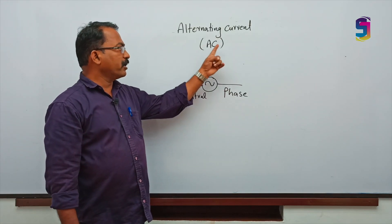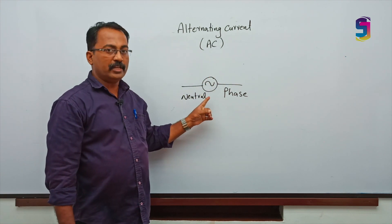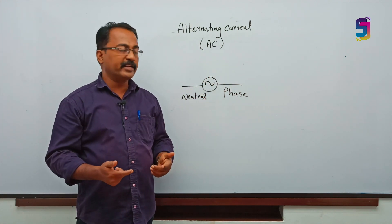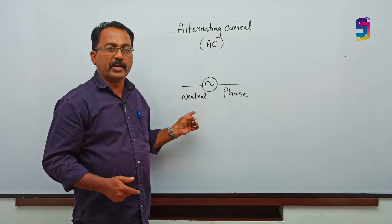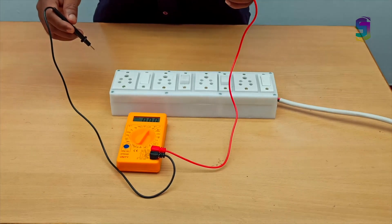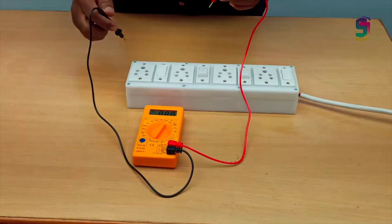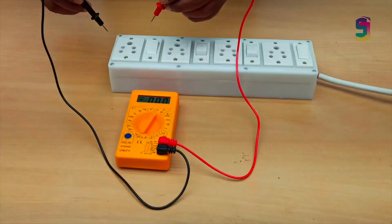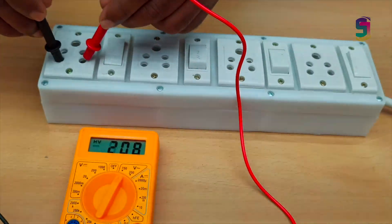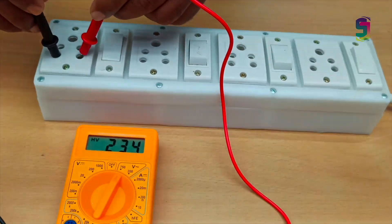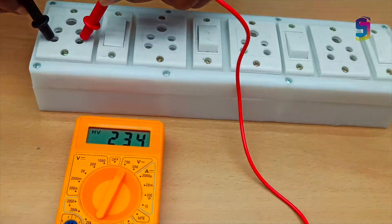The next type of current is alternating current or AC. This is an AC source. Instead of positive and negative, AC has phase and neutral. Now I am measuring the voltage of our domestic supply using a multimeter. You can see the voltage of our domestic supply — it is 234V.